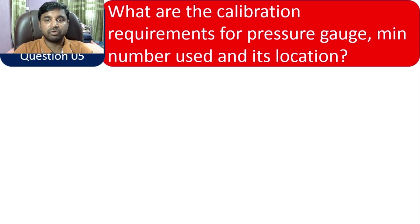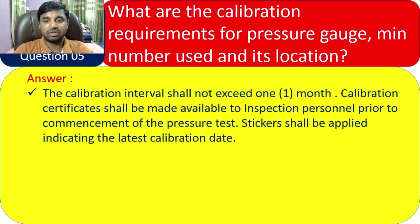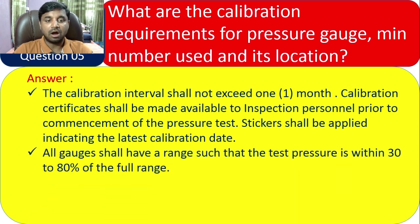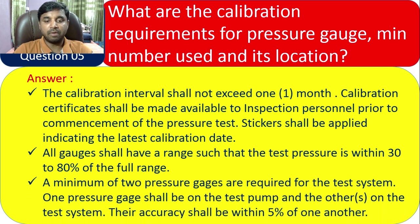Question 5: What are the calibration requirements for pressure gauges — minimum number of use and location? The calibration interval shall not exceed one month. Calibration certificates shall be made available to inspection personnel prior to commencement of the pressure test, and stickers should be available on the particular pressure gauge. All gauges shall be of a range such that the test pressure is within 30 to 80% of the full range. A minimum of 2 pressure gauges are required — one on the test pump, the other on the test system — with accuracy within 5% of one another.